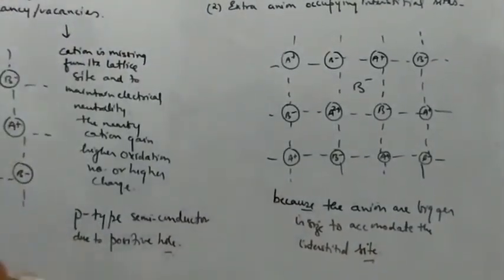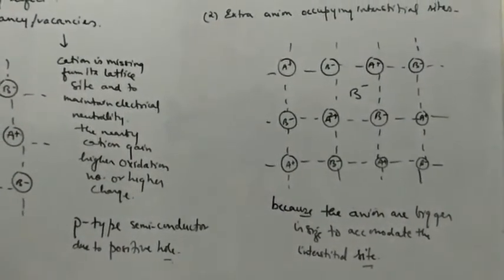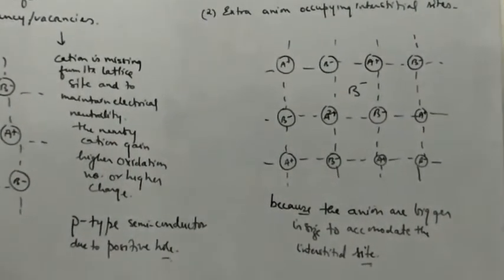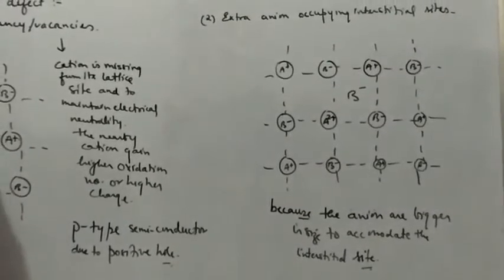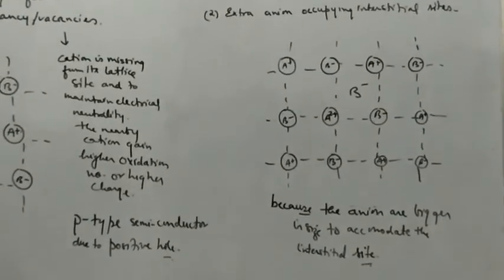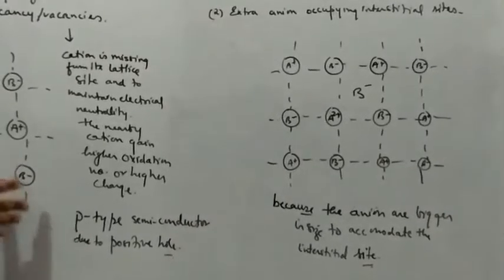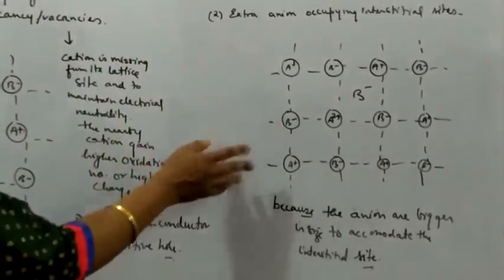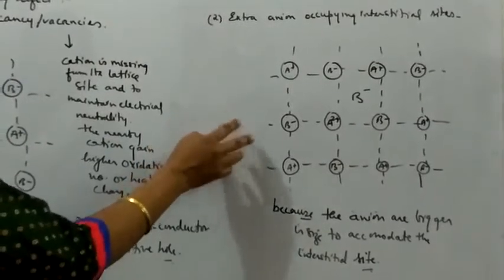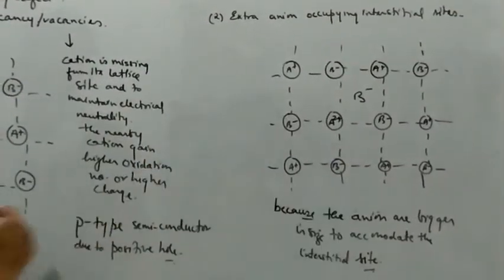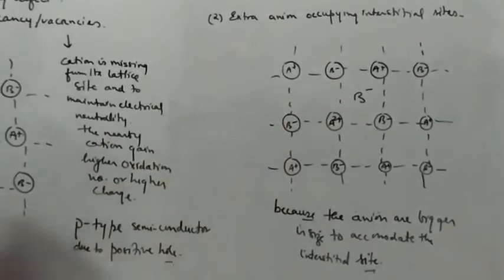In metal deficiency defect caused by cationic vacancy, electrical conductivity increases and this is the common type. The type caused by extra anion occupying the interstitial site is rare, because the anion size is too large to fit into the interstitial site.